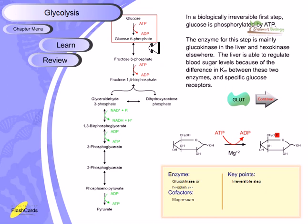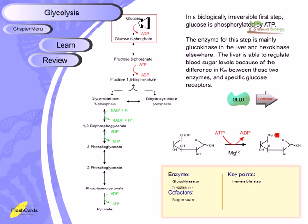The first of ten steps of glycolysis: glucose is modified into glucose-6-phosphate by the addition of a phosphate group from ATP. The enzyme for this step is glucokinase in the liver and hexokinase everywhere else. So enzymes converting glucose to glucose-6-phosphate present in the liver are called glucokinase, while those present in other tissues — such as muscle cells — are called hexokinase.